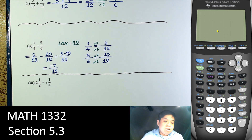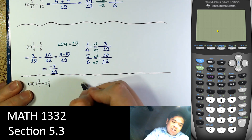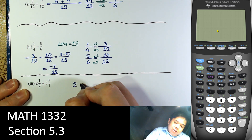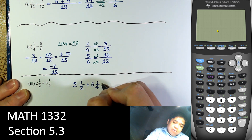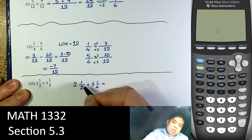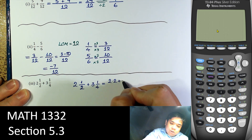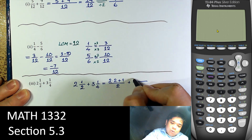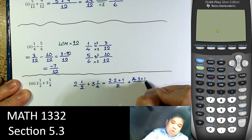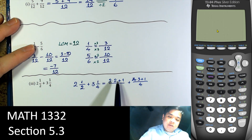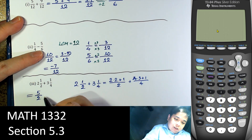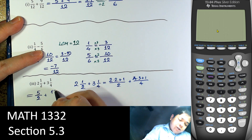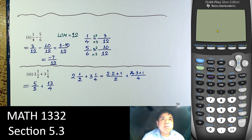If we have mixed numbers, convert to fractions first. 2 and 1/2: 2 times 2 plus 1 over 2 gives us 5 over 2. 3 and 1/4: 4 times 3 plus 1 over 4 gives us 13 over 4. Convert to fraction first.